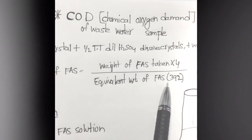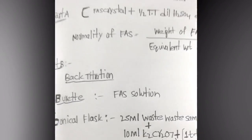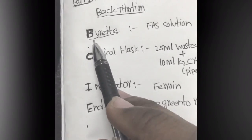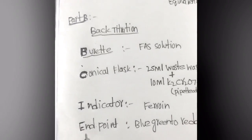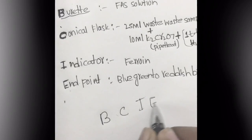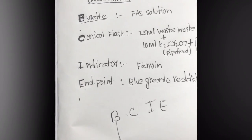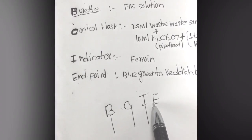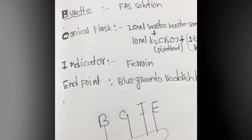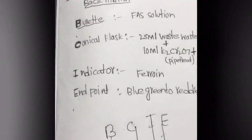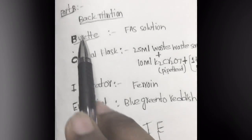In Part B, we will be doing a back titration. Remember the mnemonic B-C-I-E: B is Burette, C is Conical flask, I is Indicator, E is Endpoint. This can be followed for all Group A experiments in first-year chemistry engineering.